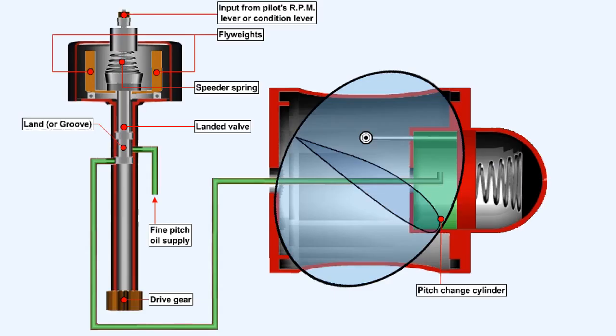The constant speed unit, or CSU, incorporates a valve, which, because it has lands or grooves cut into the operating portion of its stem, is called a landed valve. This landed valve controls the flow of oil to and from the propeller actuating, or pitch change, cylinder. A speeder spring, acting above the valve, tends to force the valve downwards, while a set of flyweights, driven by the engine, oppose the spring and act to lift the valve.